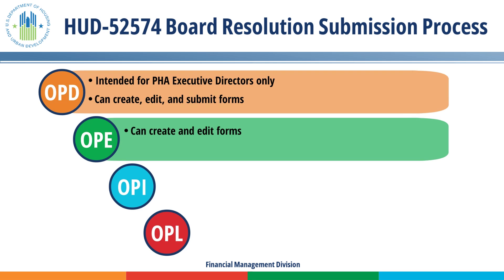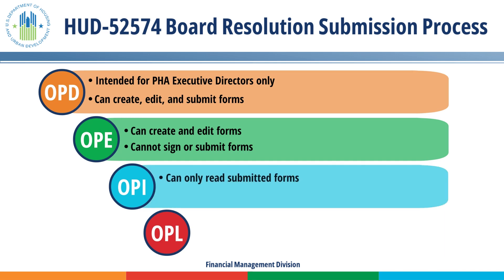The OPE user can create and edit the HUD-52574, but they cannot sign or submit the forms. The OPI user can only read submitted forms — they cannot create, edit, sign, or submit the forms. Follow up with your PHA's WAAS coordinator to ensure they only assign one role per user. In cases where a user has more than one role assigned, the system will automatically default to the access rights of the lower of the two roles.